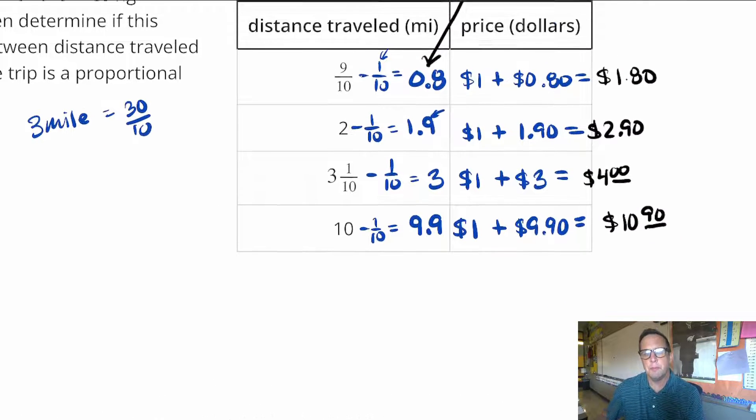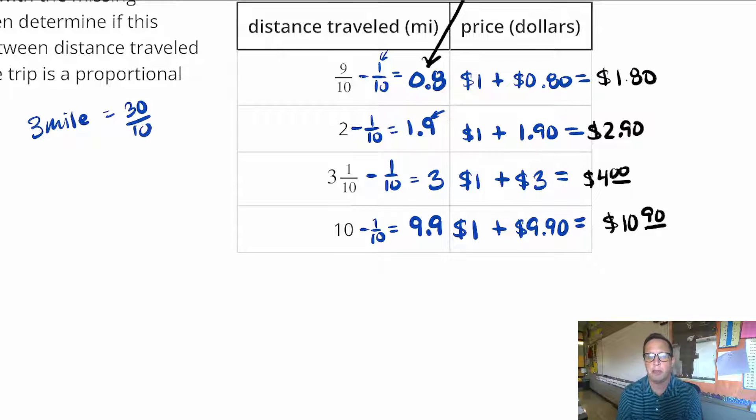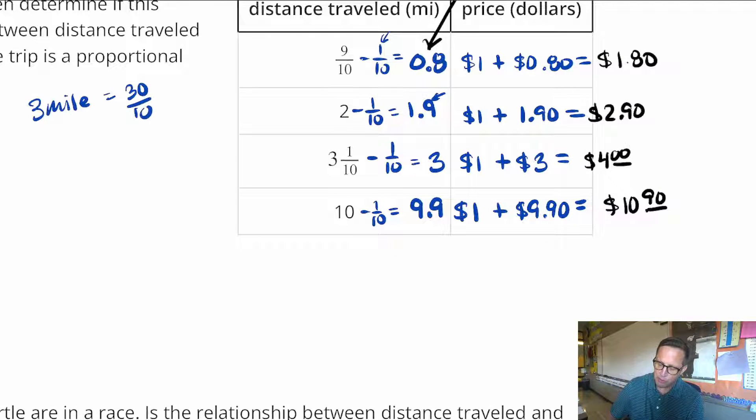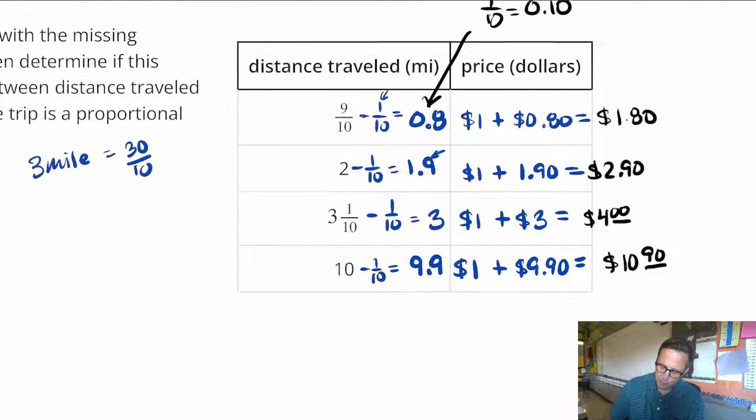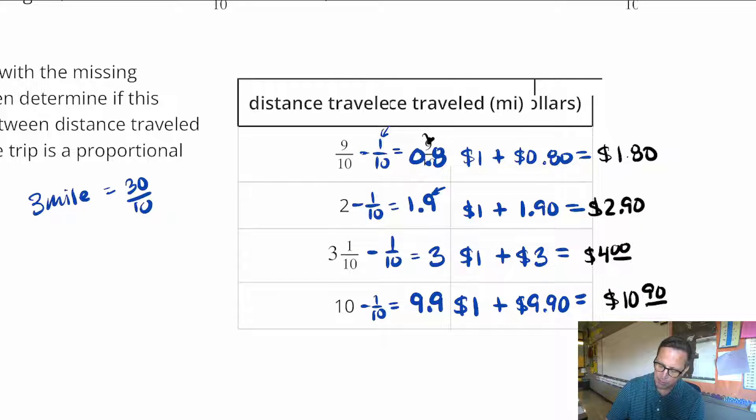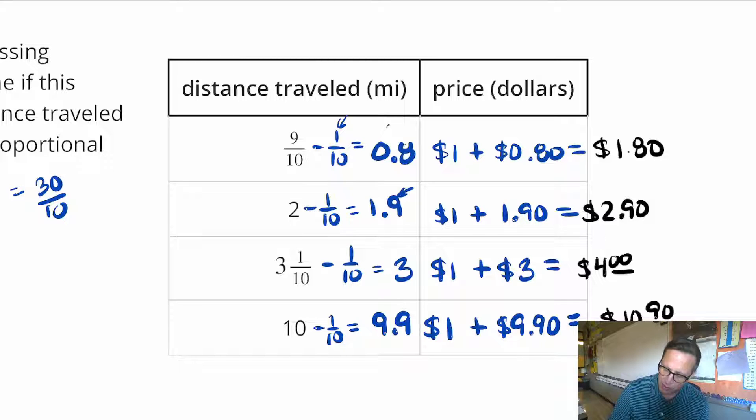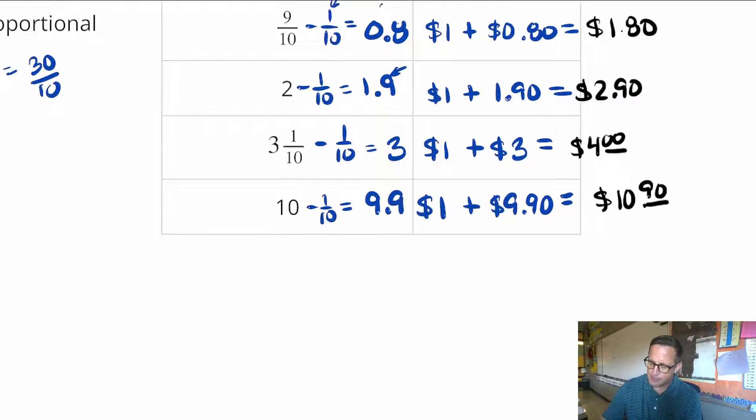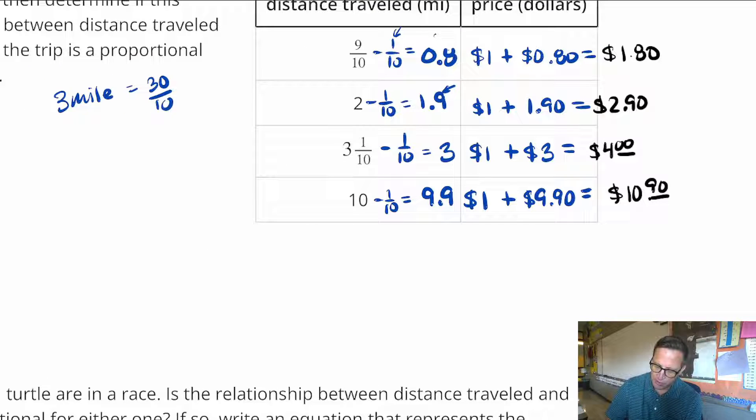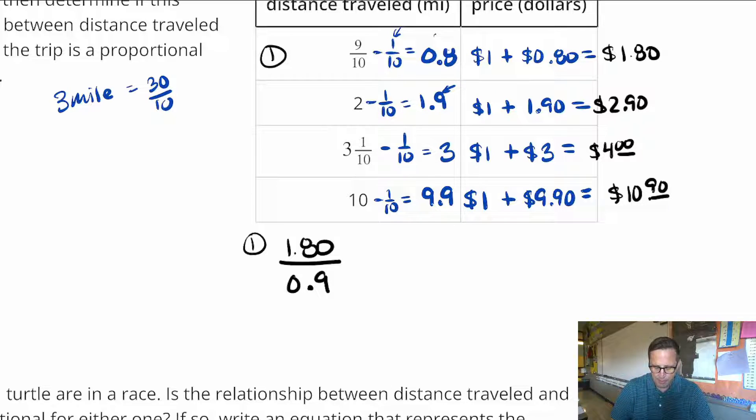Now don't mistake with what I was just doing there. Those are not constants of proportionality that I was just figuring out. I was merely just figuring out the price in dollars. So now if I want to figure these out, I'm just going to do price divided by distance. So I'm going to do P, and I'll call this D. And so I'm going to do for the first one, I'm going to do $1.80 divided by 9 tenths, which comes out to 2.